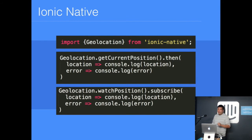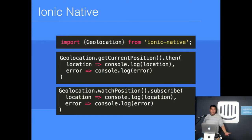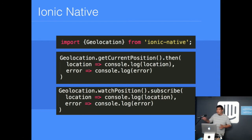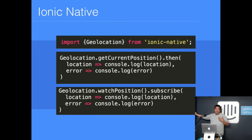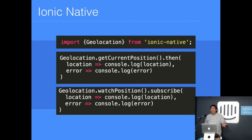Ionic Native looks kind of like this — here's an example of the Geolocation plugin. You can see we're just importing the dependency from Ionic Native. We're calling getCurrentPosition, it returns a promise, and we handle the promise. Similarly, watchPosition returns continuously, so it's implemented as an observable instead. Ionic Native is also framework agnostic — you don't have to use it in an Ionic project, you can use it in any TypeScript project.